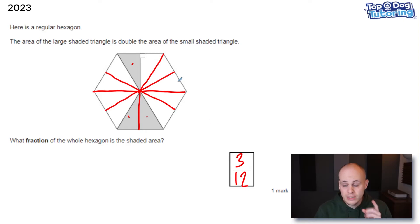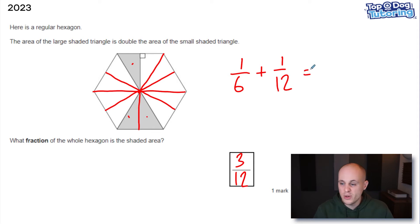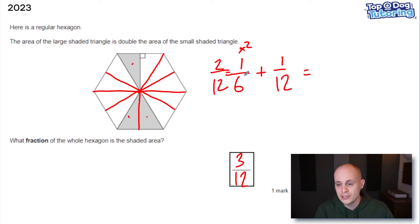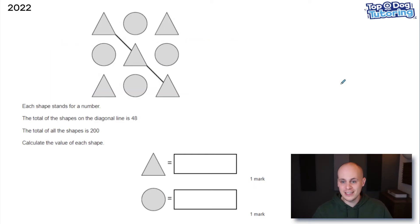Another way to do this — some of you might have done this quicker in your head — is to think: that large triangle was one sixth of the hexagon, and the smaller triangle being half of it is therefore one twelfth, because the denominator doubles as the fraction gets half in size. If you add these two together, one sixth as an equivalent fraction is the same as two twelfths, add them together and you get three twelfths. A really cool question, one of my favorites.